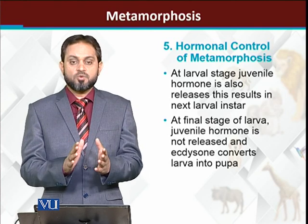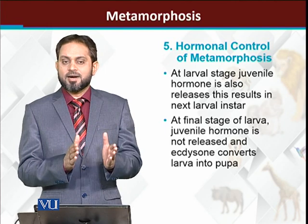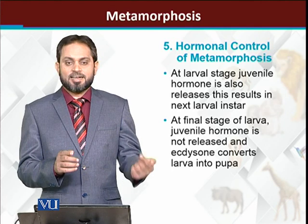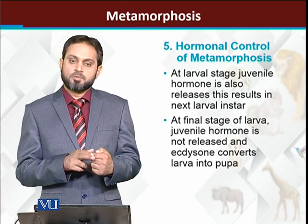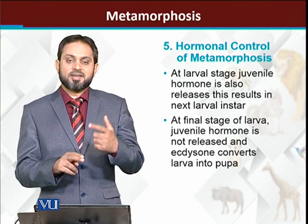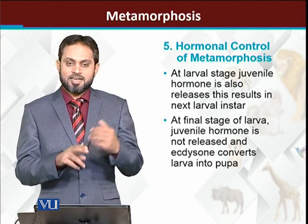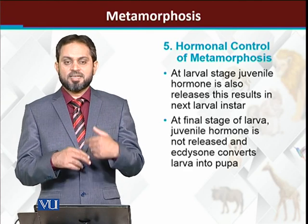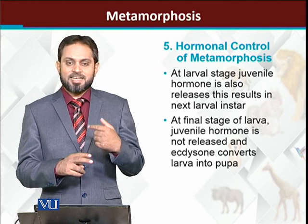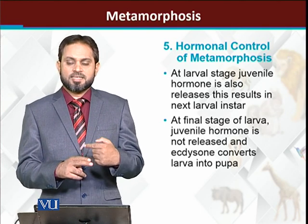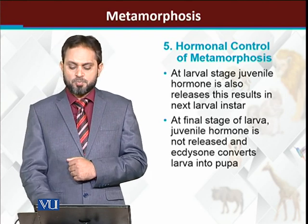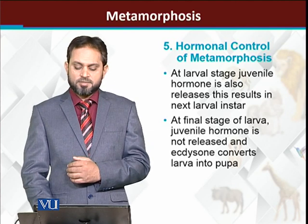The prothoracic glands are stimulated by the prothoracicotropic hormone (PTTH), which stimulates the prothoracic gland to release ecdysone, and then ecdysone causes metamorphosis to start. There is another hormone in invertebrates called juvenile hormone. Juvenile hormone works with ecdysone. If the animal wants to remain in the larval stage, both ecdysone and juvenile hormone are produced together — juvenile hormone prevents the larva from converting into pupa. But when the final larval stage arrives and the larva is to convert into pupa, secretion of juvenile hormone stops. As a result, ecdysone acts alone, and due to ecdysone acting alone, the larva is converted into the pupa stage.